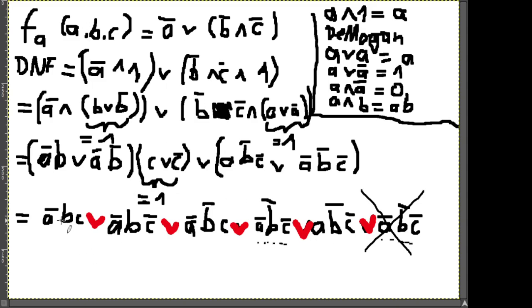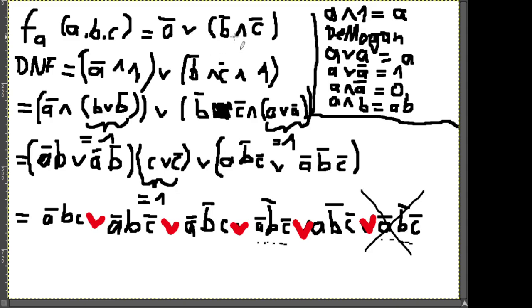Damit haben wir unsere kanonische DNF: alle Variablen drin in jedem Term, auf der obersten Ebene nur Oder-Verknüpfung zwischen Termen, die in Und-Form verknüpft sind. So zur DNF: immer gucken, welche Verknüpfung wir auf Hauptebene haben, und dann alle Eingangsvariablen in die Terme reinbringen.